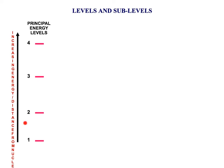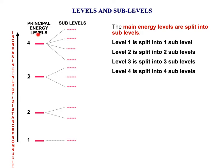You've got your principal energy levels — these are the shells — so you've got your first, second and third shell, like in the Bohr model. But these shells, or energy levels, are divided up into subshells. The first shell contains just 1 subshell, the second shell contains 2 subshells, and the third shell contains 3 subshells and so on.